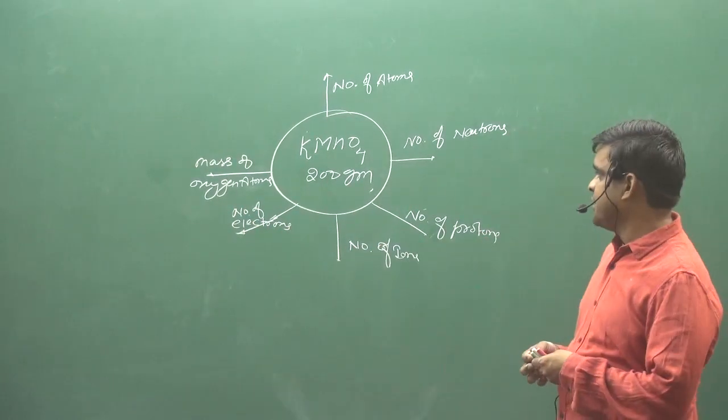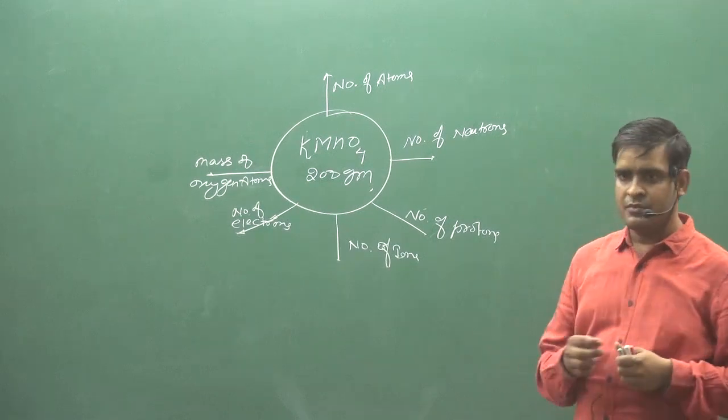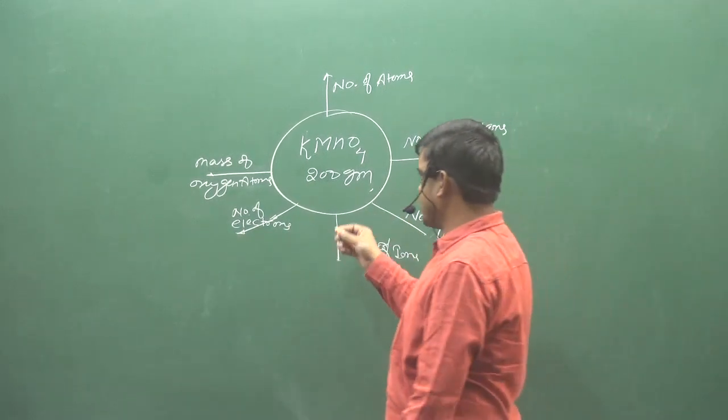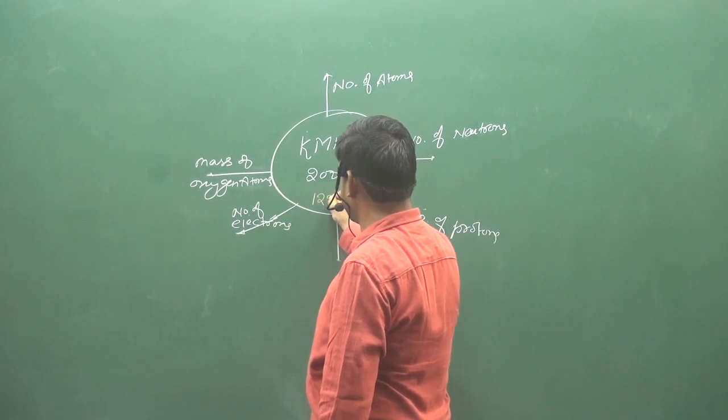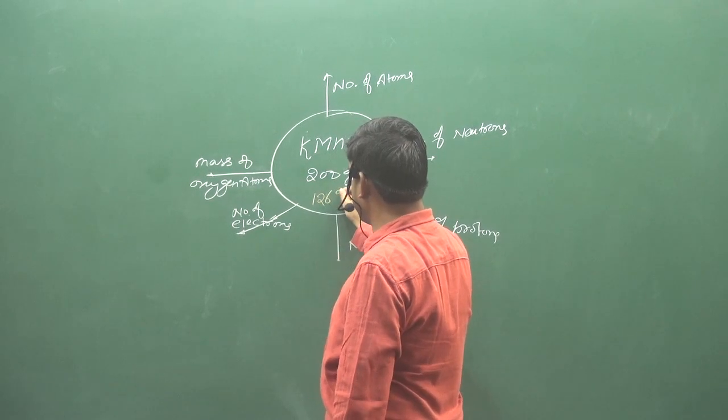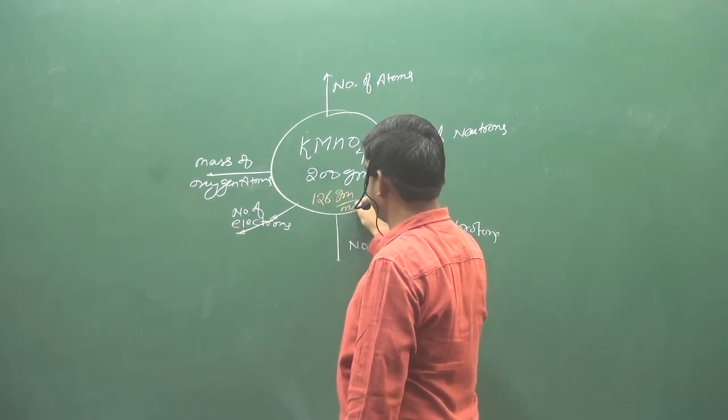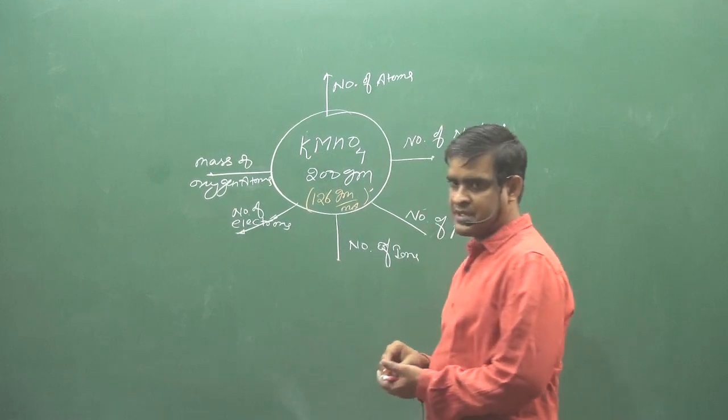KMnO4 has given 200 grams of mass. We have removed its molar mass of 126. The molar mass of the unit is 1 gram per mole. This has come to us.